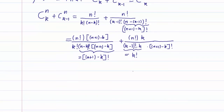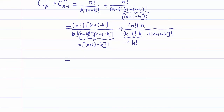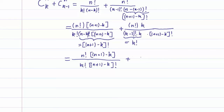So let me rewrite this so that it looks a little bit more clean. We have n factorial times (n plus 1 minus k) over k factorial times n plus 1 minus k factorial, plus n factorial times k over k factorial times n plus 1 minus k factorial. Now you can see what is going to happen — I'm going to distribute the n factorial within the parenthesis.